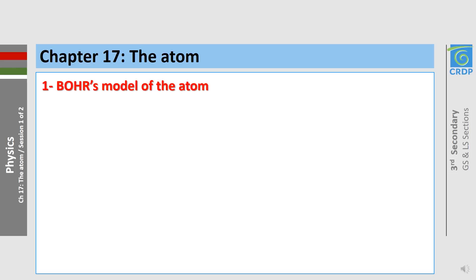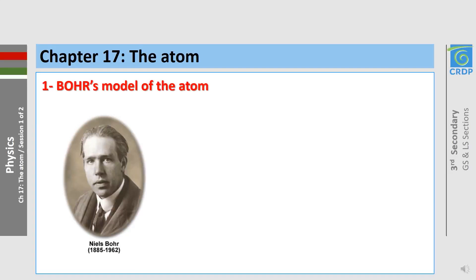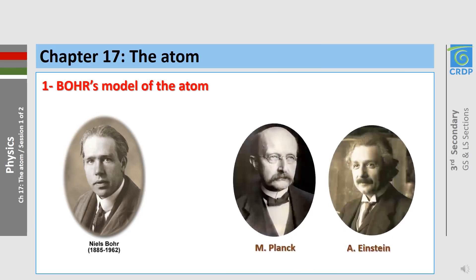In 1913, the Danish physicist Niels Bohr, inspired by the work of Planck and Einstein, proposed a model for the atom based on certain assumptions.